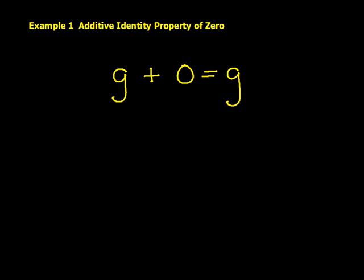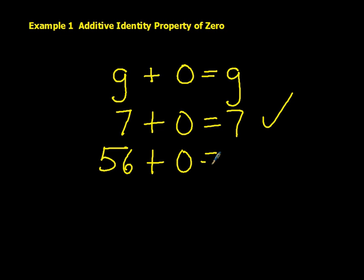So let's look at example 1, the additive identity property of 0. Here we have a statement, G plus 0 equals G. So the question is, can we put in any number for the letter G? Let's throw out a few numbers here. Let's do 7 plus 0 equals 7. Is that correct? It sure is. Let's choose a bigger number. 56 plus 0 equals 56. Is that correct? The answer is yes. So you could pause the video, throw in some different numbers for the letter G, and see if they work out.